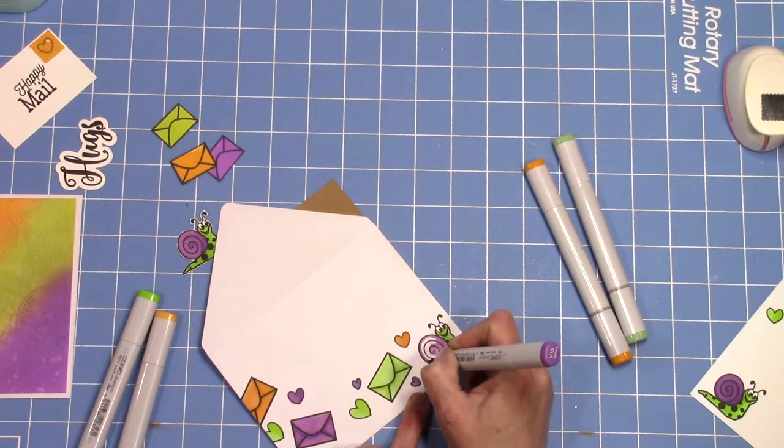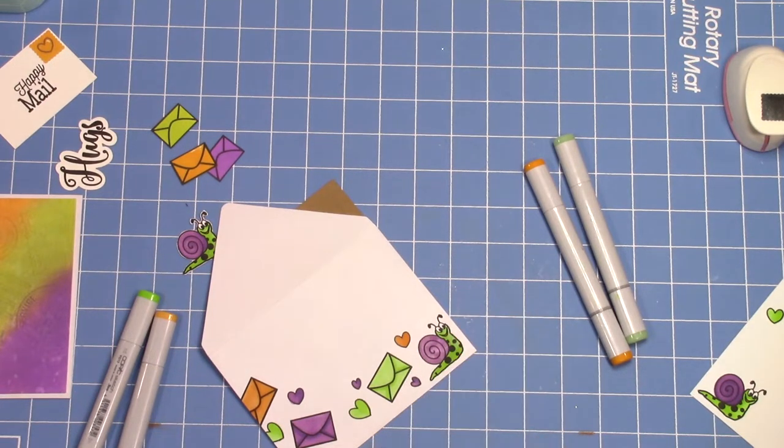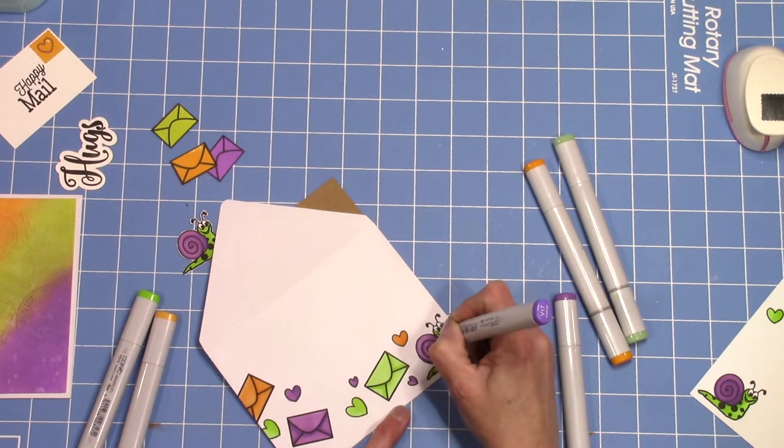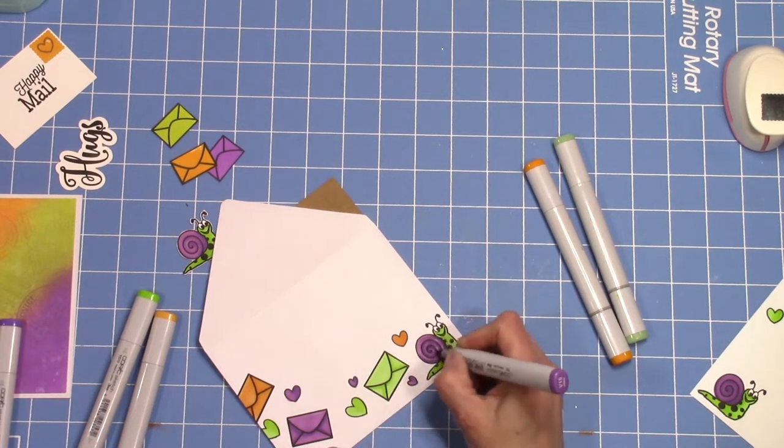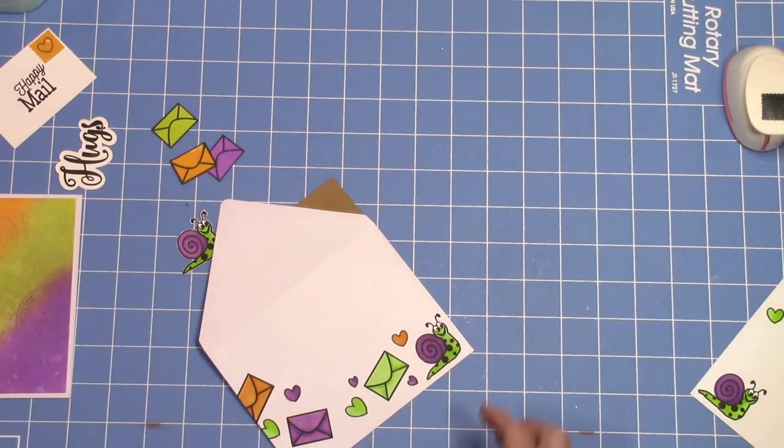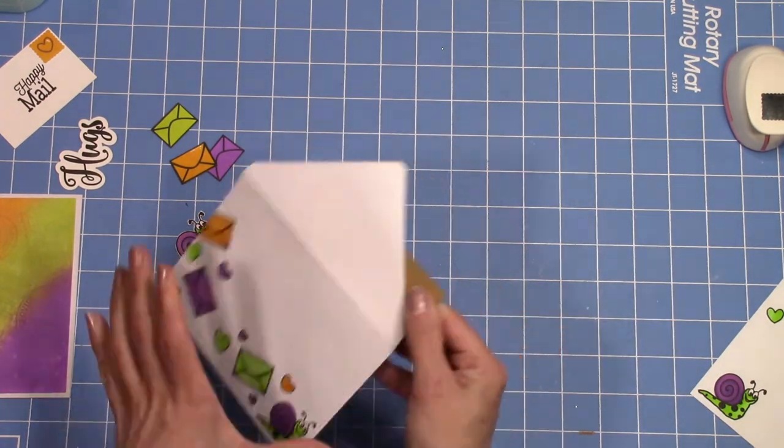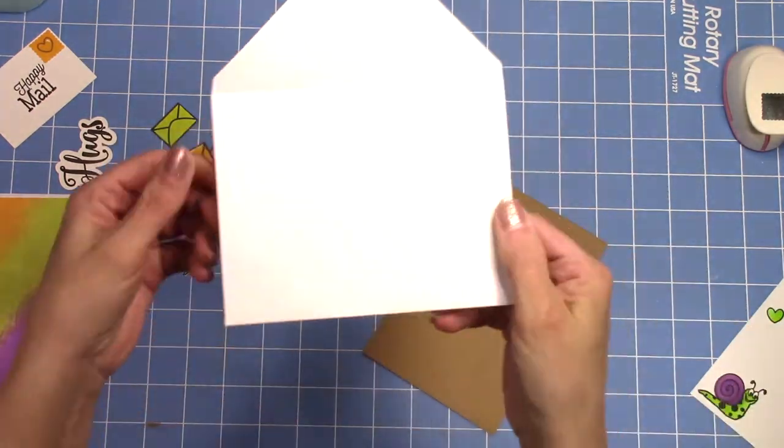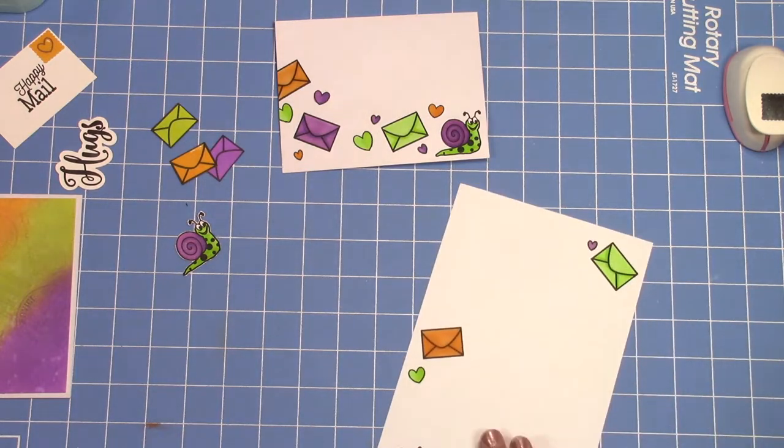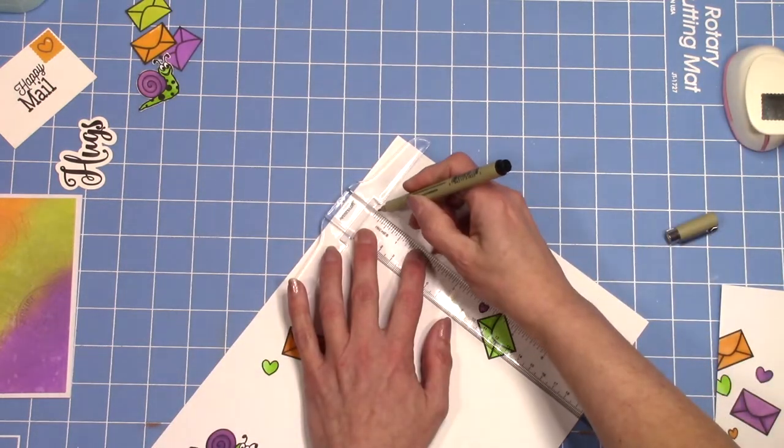For the snail that's cut out on the top there, that's on Copic friendly paper but the rest of it is not. My stationery I actually cut from an eight and a half by eleven piece of 65 pound white cardstock and cut it in half, and that's what I'm using for my stationery.